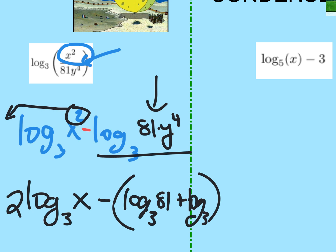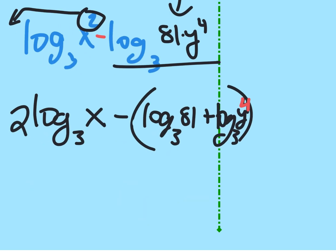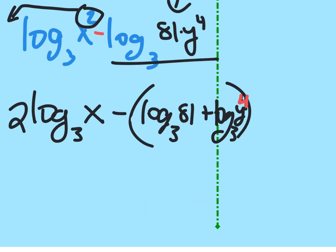That can be broken up further. A lot of kids on the test get to this point and stop because they think they've expanded it — but it can go further. Anjali, can you tell me one more thing I could do? 81 is three to the fourth power. Very good — expand it further: put the four down in front.